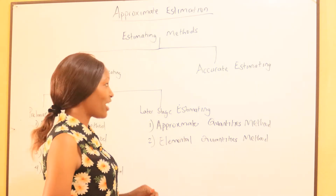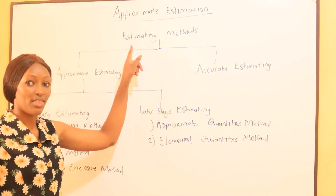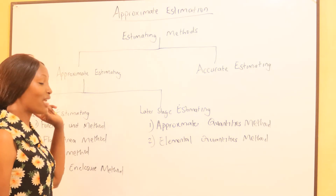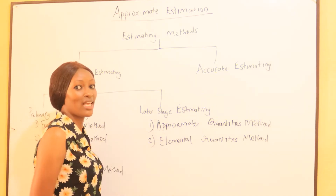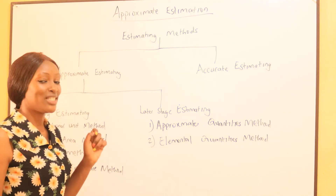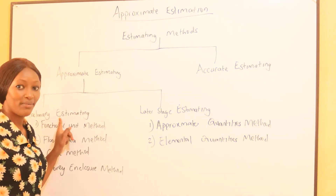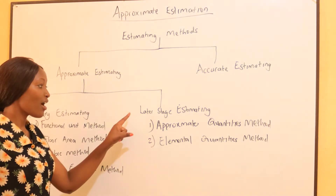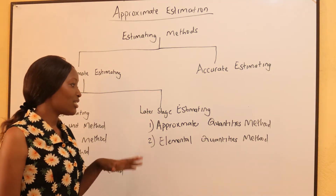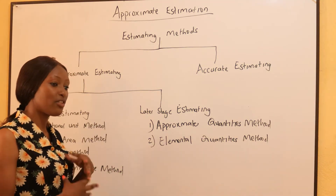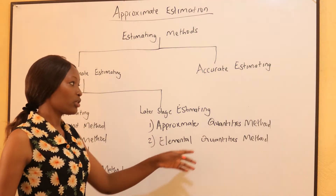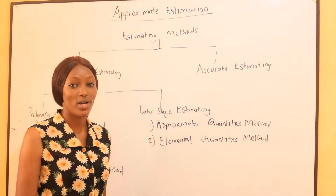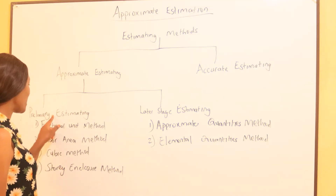Just as I have written here, we have two types of estimating methods: first, approximate estimating, and then accurate estimating. For approximate estimating, there are preliminary methods — used before you have the full details of the drawings — and later stage estimating methods, used after you have the full details of the drawings but not as accurate as accurate estimating. For accurate estimating, we mostly use the Bill of Quantities.